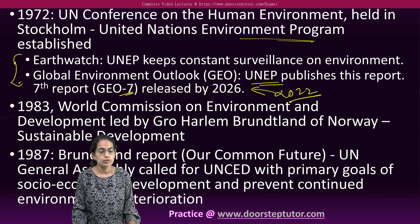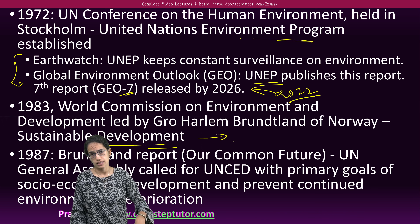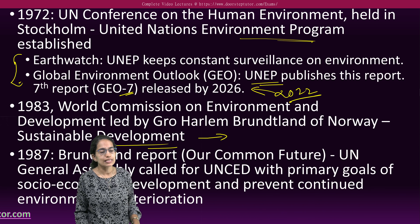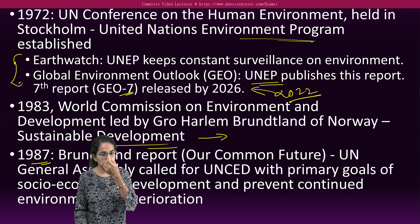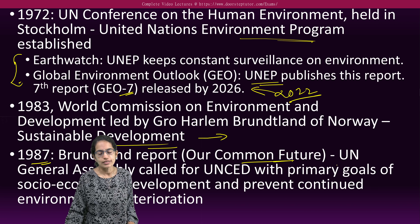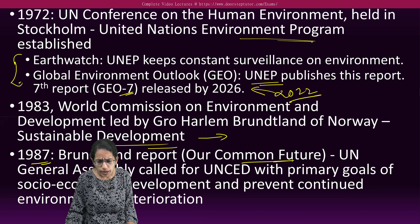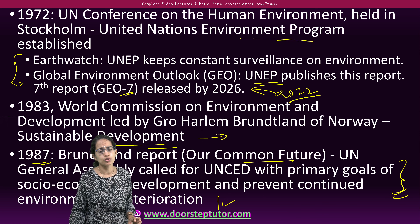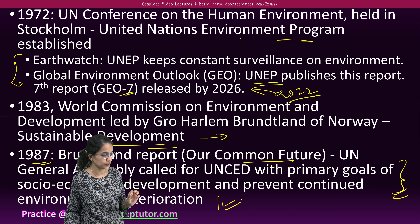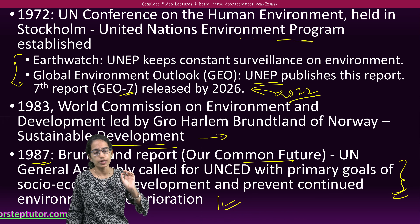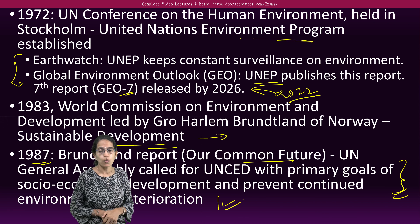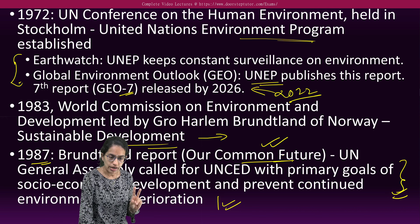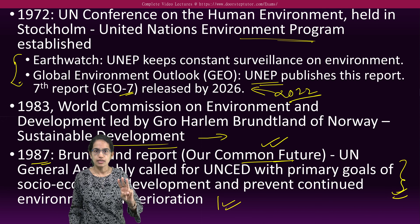In 1983, the Brundtland Commission came into existence, and this committee talked about sustainable development — that means using present resources in such a way that they are useful for future generations as well. The next milestone was in 1987, when the Brundtland Report, known as 'Our Common Future,' came into existence with a major goal of socio-economic development while preventing environmental deterioration.